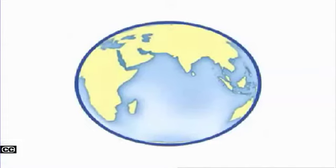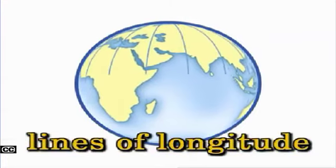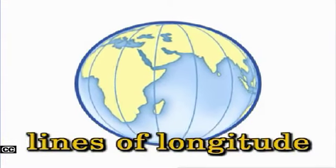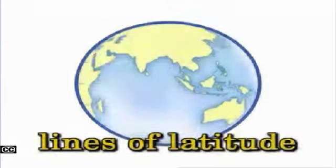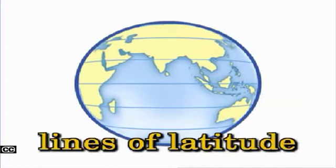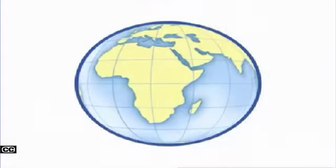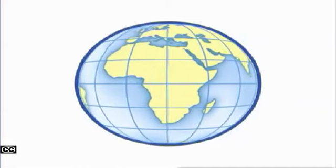And the poles are both places where Earth's lines of longitude meet. Lines of longitude are imaginary lines that run from the North Pole to the South Pole. Lines of latitude and lines of longitude help us divide Earth into sections.